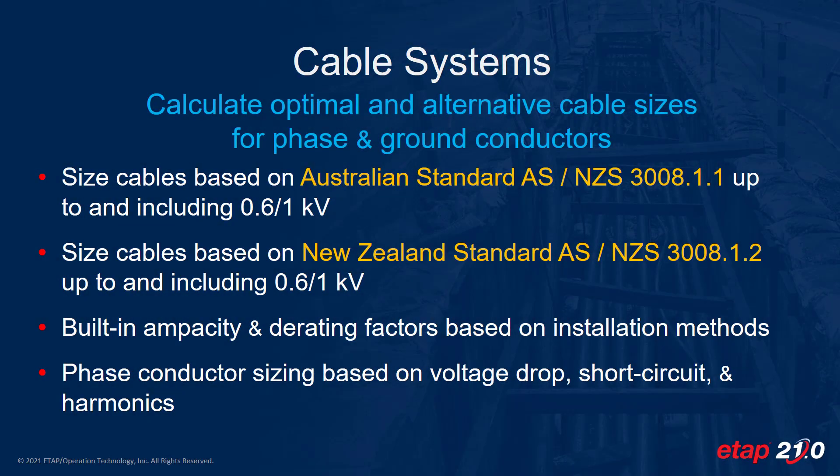The AS-3008 and NZS-3008 method is based on the Australia-New Zealand standard for electrical installation selection of cables. When AS-3008 is selected from the standard drop-down, this method is based on Part 1.1 of the standard — cables for alternating voltages up to and including 0.6 to 1 kV, typical Australia installation conditions. When NZS-3008 is selected, the method is based on Part 1.2 of the standard — cables for alternating voltages up to and including 0.6 to 1 kV, typical New Zealand installation conditions.